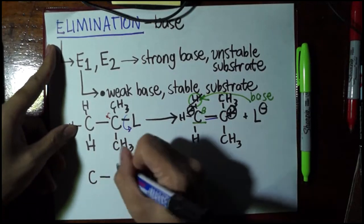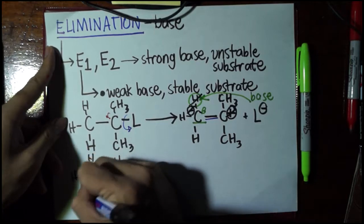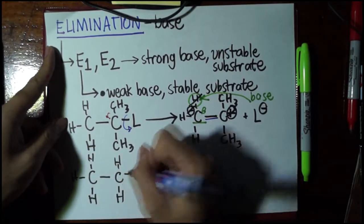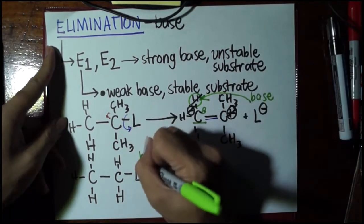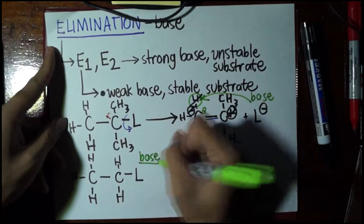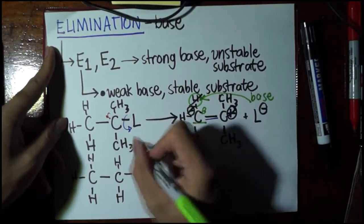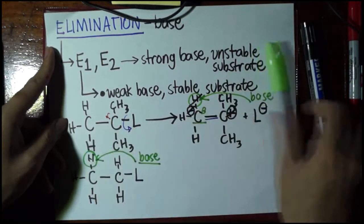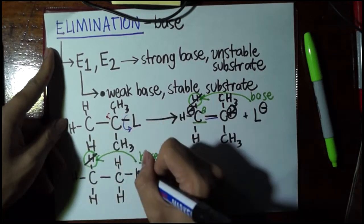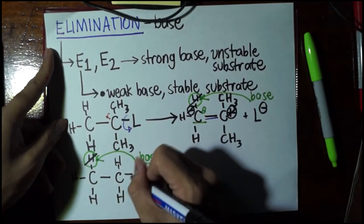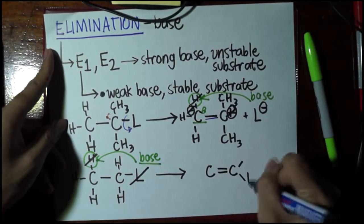Now, for E2, let's try to draw a less stable alpha carbon. So here, we only have two H's around it, leaving group here. Just like in SN2, the base, or the reagent, is strong enough that it does not have to wait for the leaving group to leave before it attacks the beta hydrogen. At the same time as the base attacks the beta hydrogen, the leaving group is forced to leave, and immediately, we are left with the alkene product.